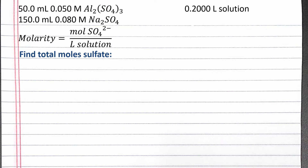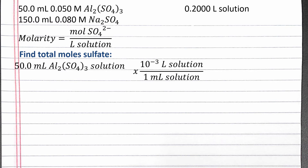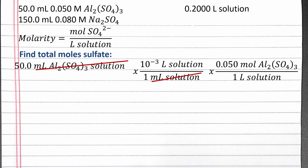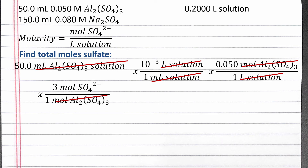Next, we can find the total moles of sulfate. We'll use dimensional analysis to convert from 50 milliliters of aluminum sulfate solution to moles of sulfate. First, we convert from milliliters to liters using our prefix multiplier for milli. Then we use the molarity of aluminum sulfate to convert from liters of solution to moles of aluminum sulfate. Then we use the chemical formula to convert from moles of aluminum sulfate to moles of sulfate — one mole of aluminum sulfate contains three moles of sulfate ions. Completing the calculation, we have 0.0075 moles of sulfate ions from the aluminum sulfate solution.